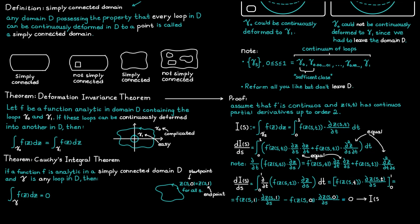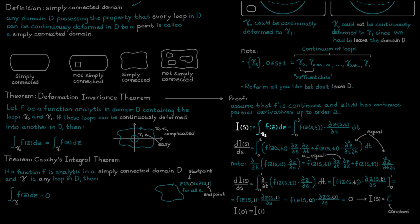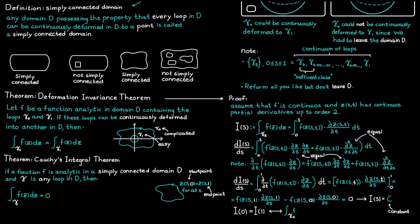Since the function I is constant, its value at S equal to zero equals its value at S equal to one. Rewriting this using the definition of I gives us the conclusion of the theorem — the integral along gamma zero equals the integral along gamma one — which is also the conclusion of this lesson.